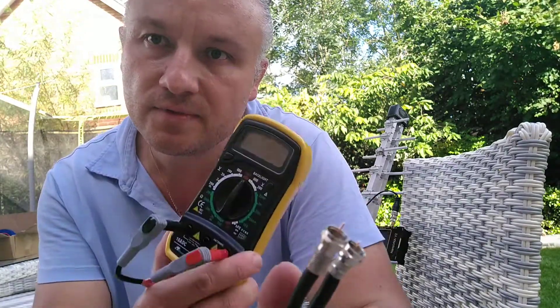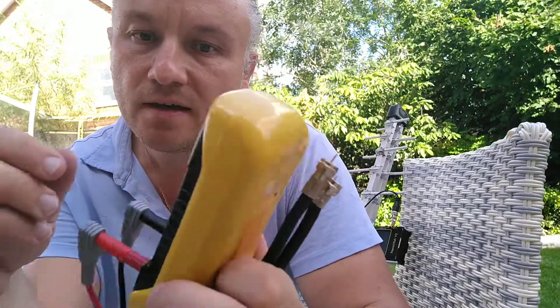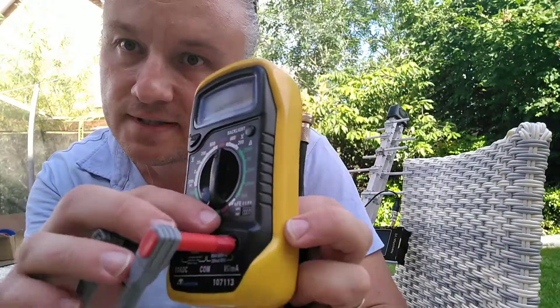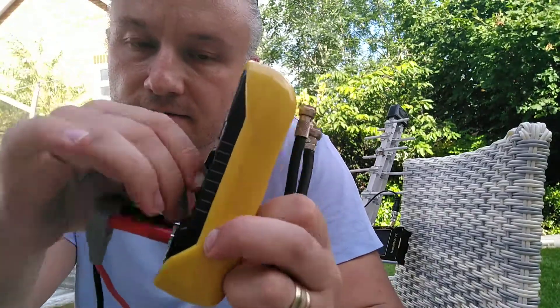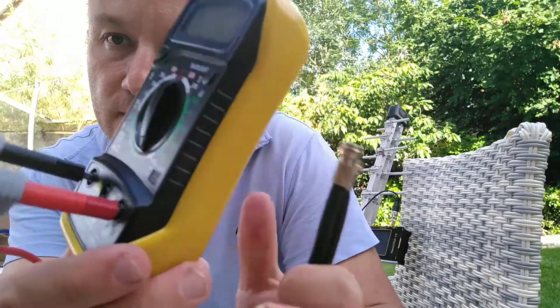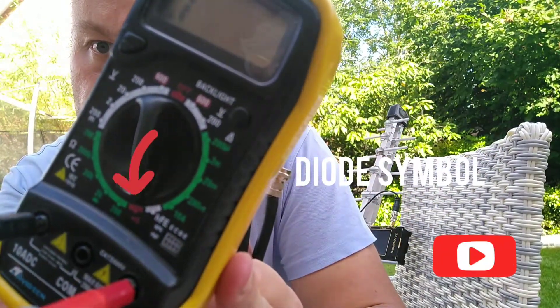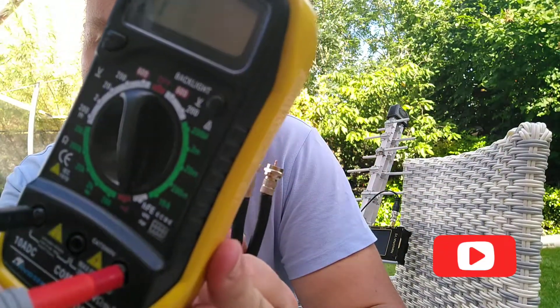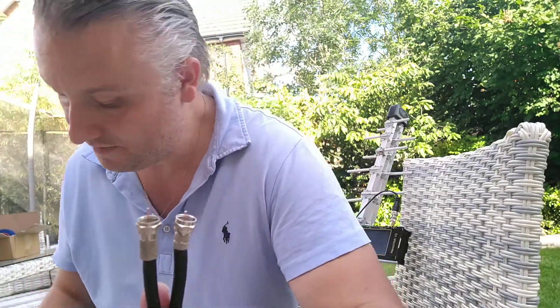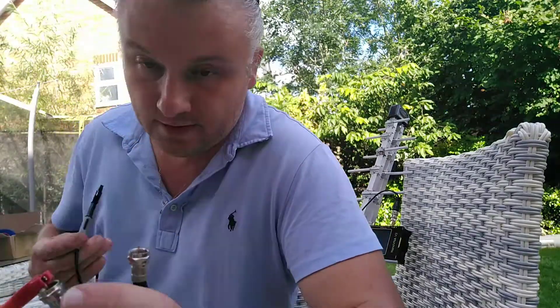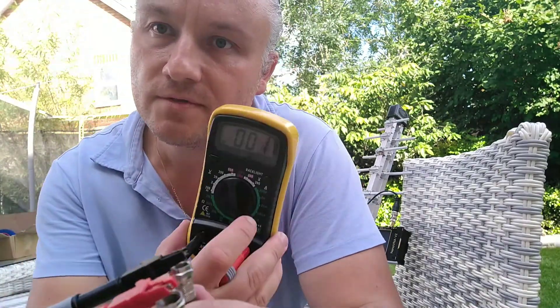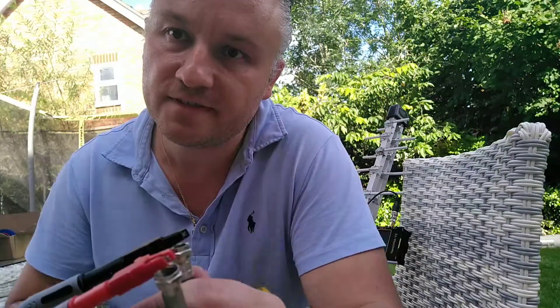Now we need to check continuity of this cable. We can do this with the multimeter. There's a diode with sound here. When it sends the signal across the conductor, if there will be a sound, that means there is continuity, which we do have. That's perfect.